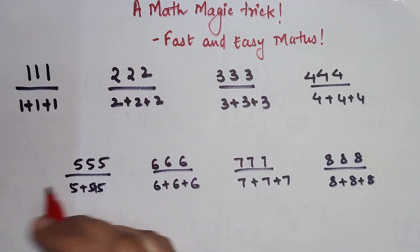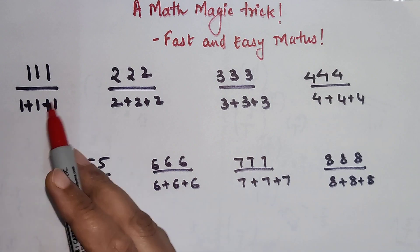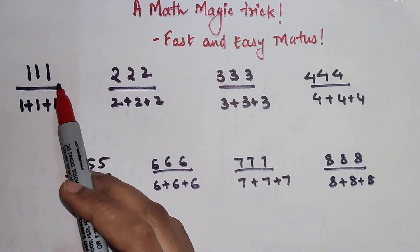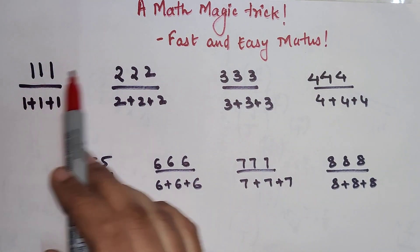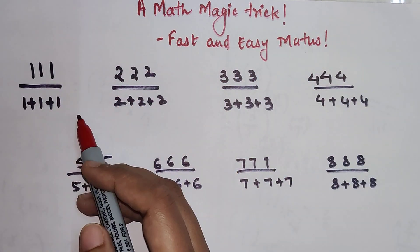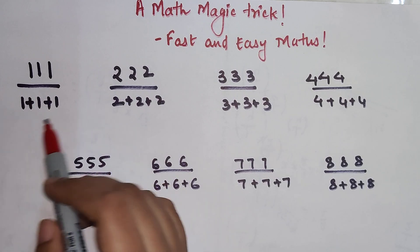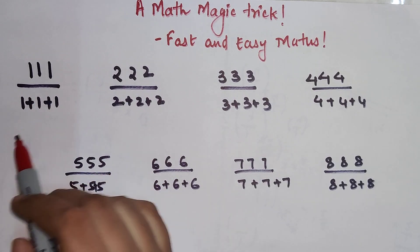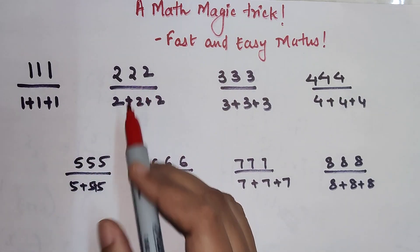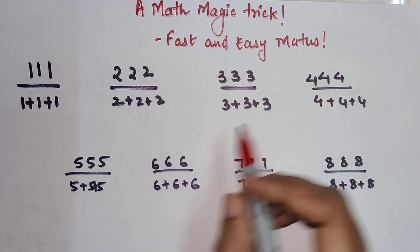Whenever you have any number from 1 to 9 that is repeated 3 times in the numerator — such as 111, 222, 333, 444 — and it is divided by the sum of those same digits (meaning 1+1+1, 2+2+2, 3+3+3, and so on)...